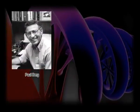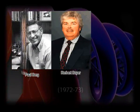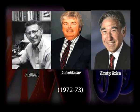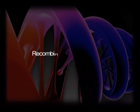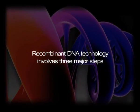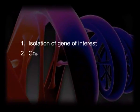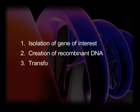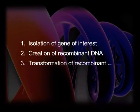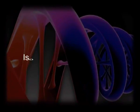The first recombinant molecules were made by Paul Berg, Herbert Boyer, and Stanley Cohen in 1972–73. In general, recombinant DNA technology involves three major steps: number one, isolation of gene of interest; number two, creation of recombinant DNA; and number three, transformation of recombinant DNA into a suitable host and its cloning.